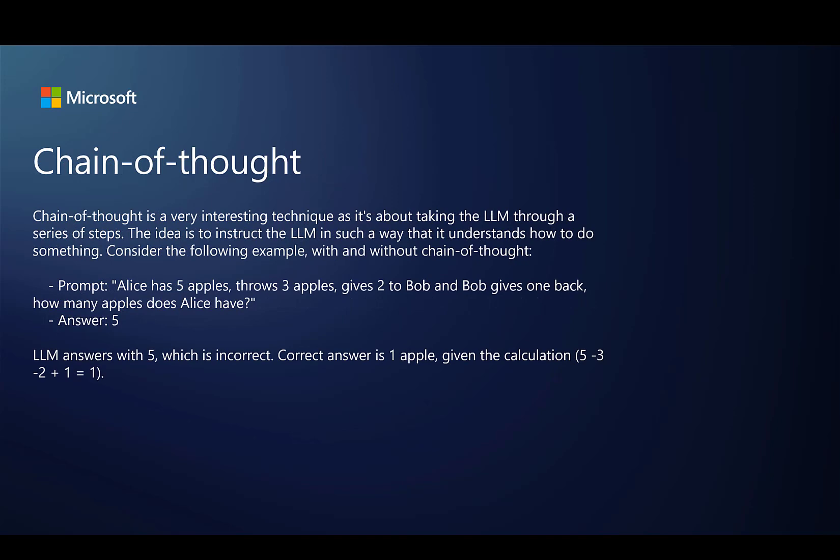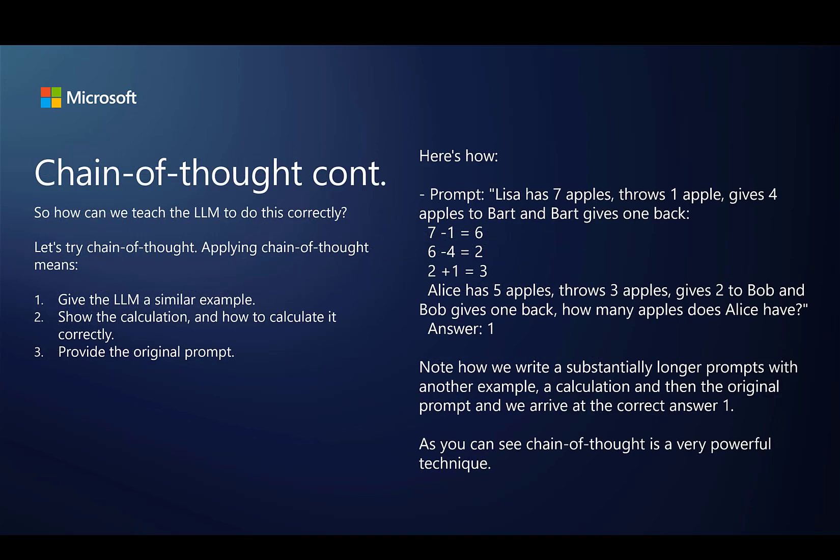Looking at an example of chain of thought, you might have a mathematical problem — for example, Alice has five apples, she throws away three apples, she gives two apples to Bob, and Bob gives an apple back. If you just ask this to the LLM, it's very likely to arrive at an incorrect response. The answer is to provide the LLM with a very similar calculation and show it how to do the calculation. Once you do that, you provide it with previous context, and then when you add your actual question, the LLM is much more likely to give you a correct response. This technique is very important for ensuring you arrive at the correct response.